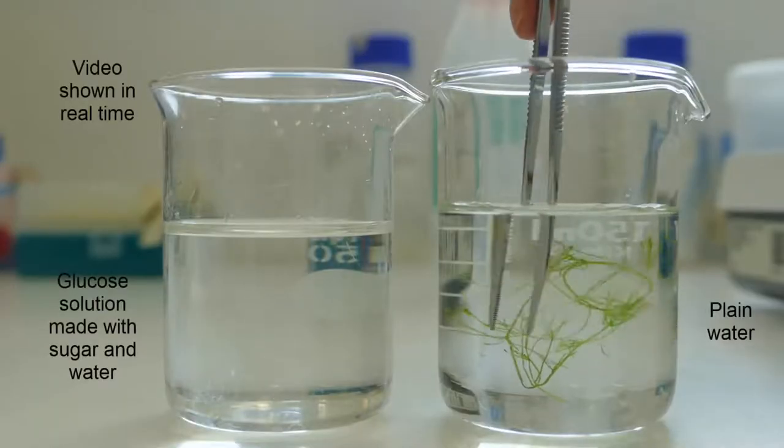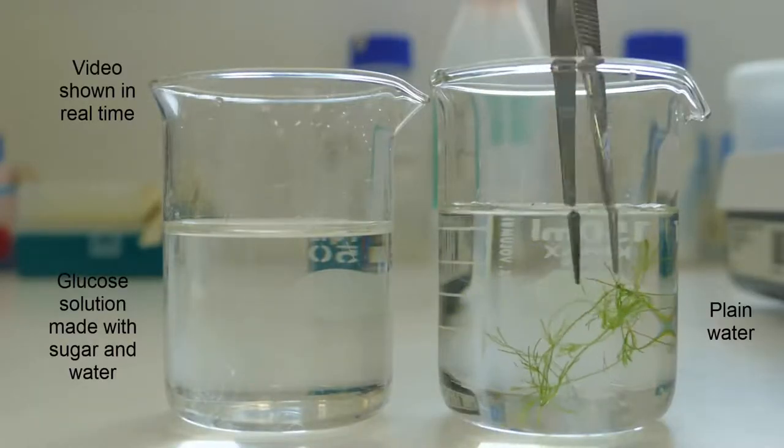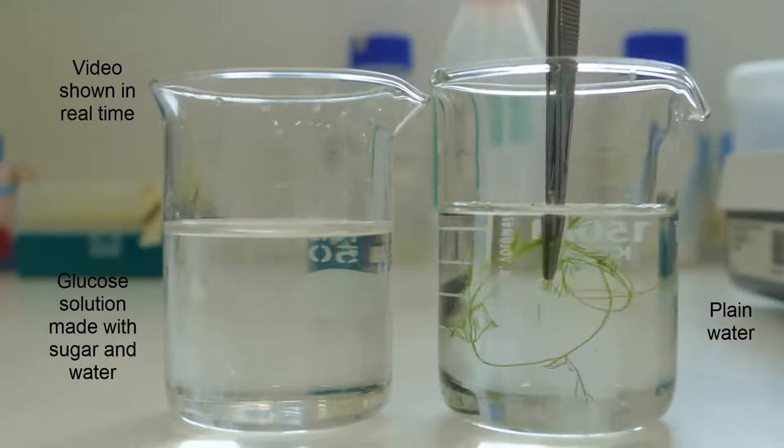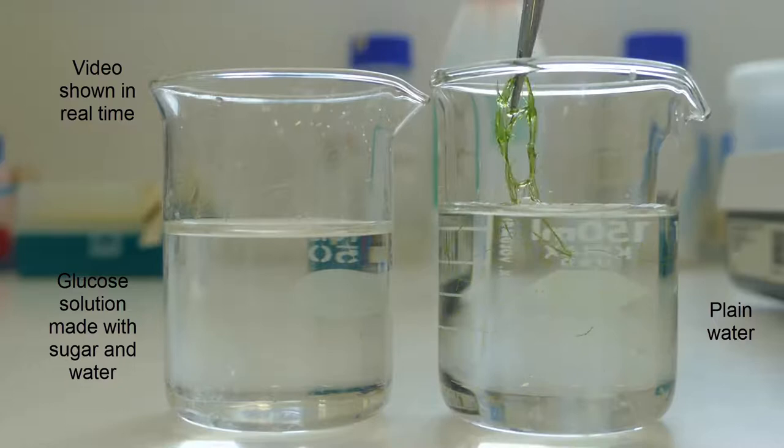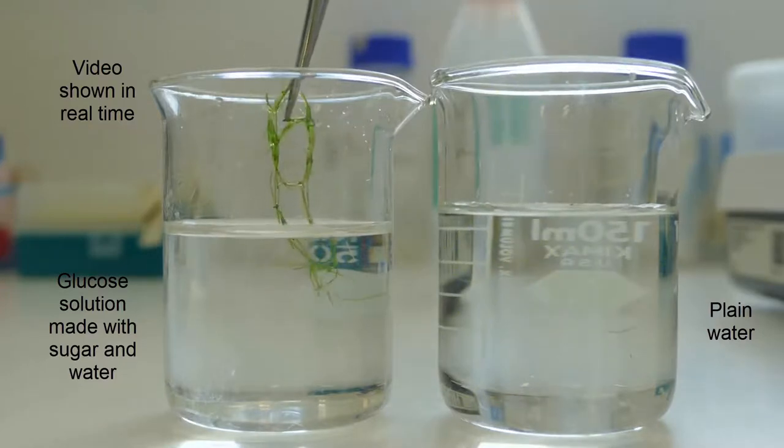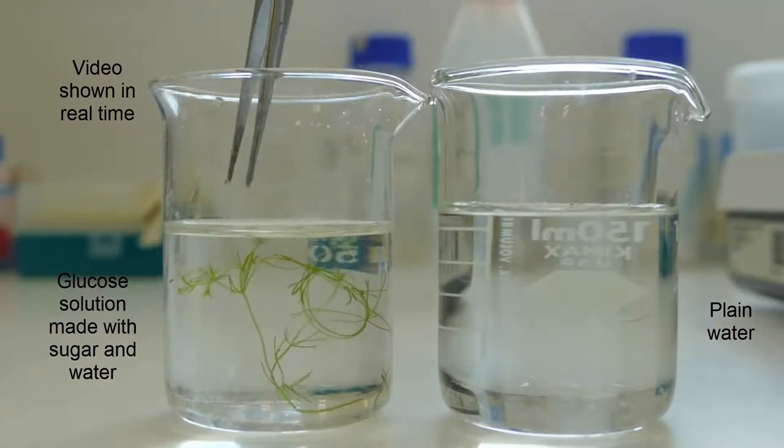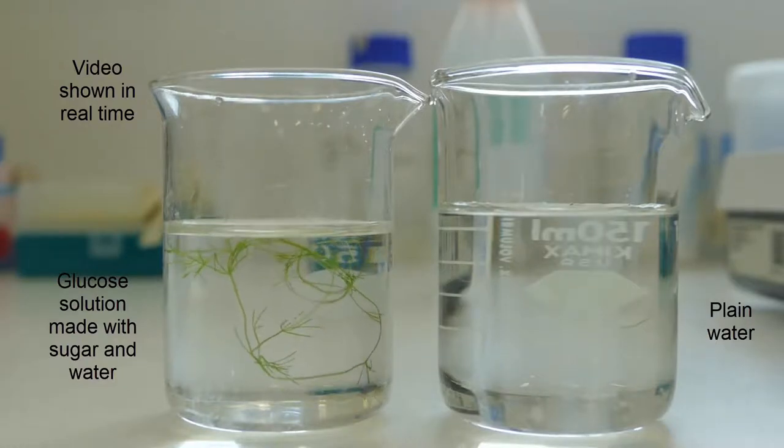In this beaker, you can see a type of green algae called nitella floating in water. When we move the algae from the beaker of water into a beaker that contains a solution of sugar dissolved in water, we trigger osmosis.